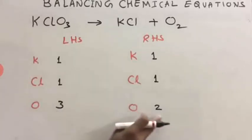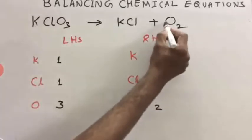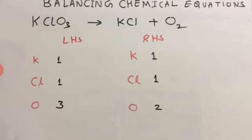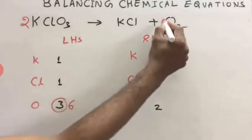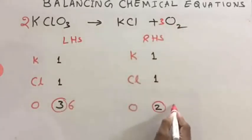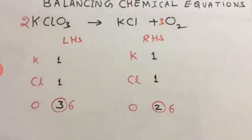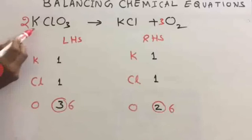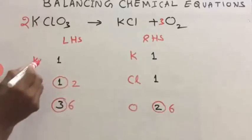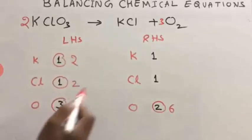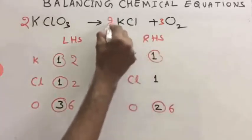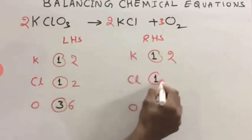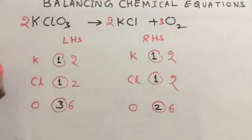Now check oxygen: here 3, here 2. If you write 2 here it will become 4 but will be unbalanced. Writing 2 here will be helpful — 2 threes are 6, and then write 3 here so that 3 twos are 6. But the number of chlorine and potassium we have to check again. Chlorine now became 2, and potassium became 2 as well. Chlorine is unbalanced, so multiply with 2. We get 2 potassium and 2 chlorine; checking all: 2, 6, 2 and 2, 6, 2. The equation is balanced.